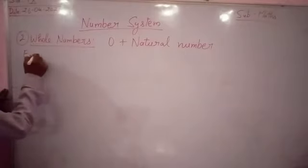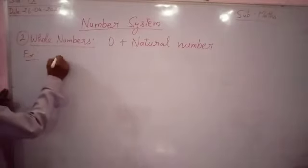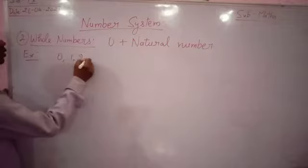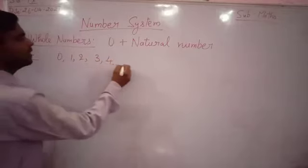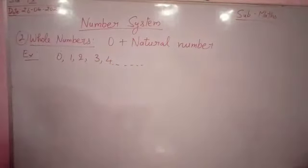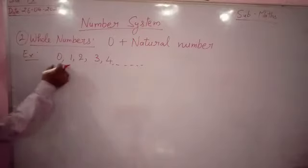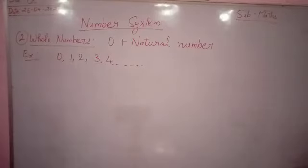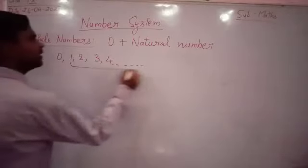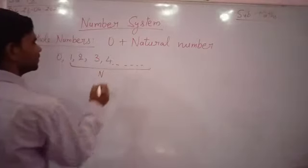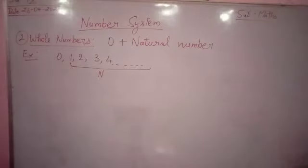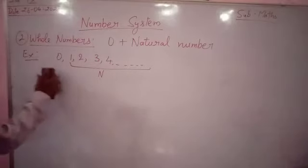Example of whole numbers: 0, 1, 2, 3, 4 and so on. Here only 0 is added, nothing else. These are natural numbers, this is set of natural numbers. So as we include 0 it becomes whole numbers.